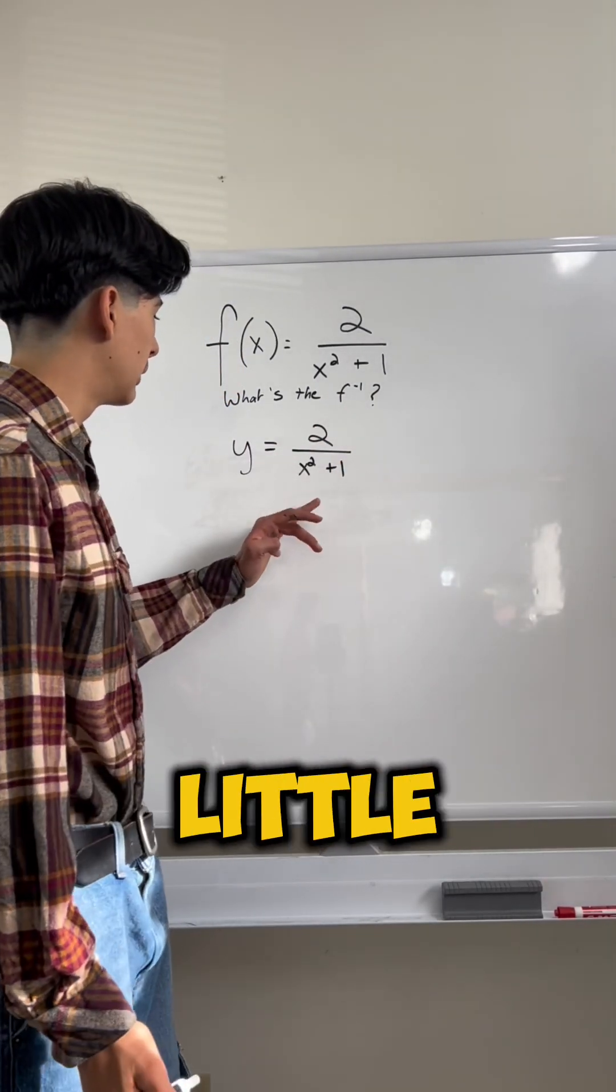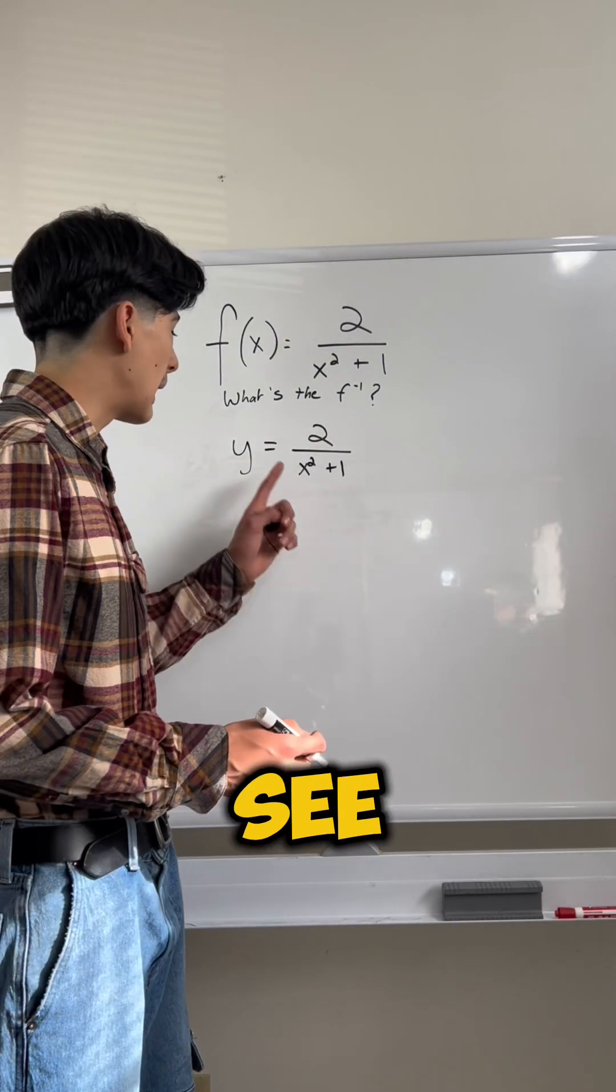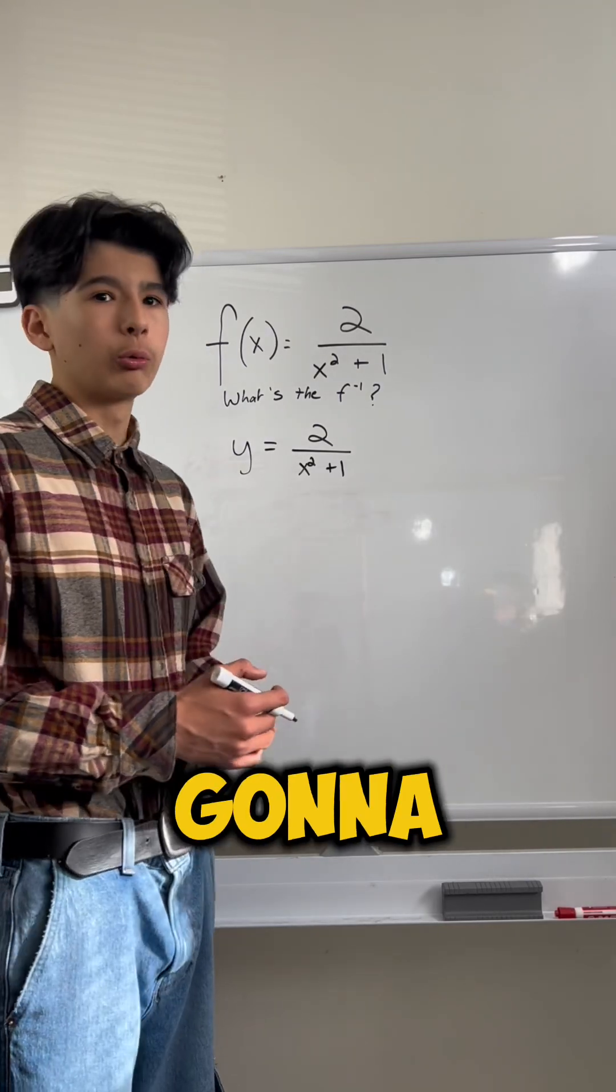Great, now we just simplify this a little bit. Now, what we have to do to find the inverse function is wherever we see x in this equation, we're going to replace with y, and wherever we see y, we're going to replace with x.